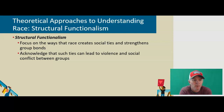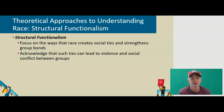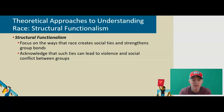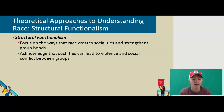When it comes to race, as with gender and other classifications, we have the major theoretical perspectives chiming in. The first we're going to look at is structural functionalism. This is a focus on the ways that race creates social ties and strengthens group bonds. It acknowledges that such ties can lead to violence and social conflicts between groups, but it doesn't really say whether that's good or bad. It's just talking about how society is held together by these group bonds and how society continues to reproduce itself in reference to those bonds.